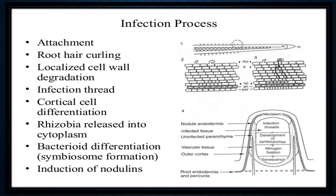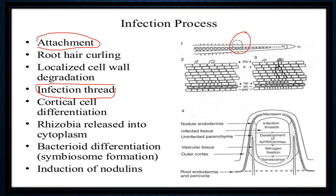The infection process involves: attachment at the root hair where lectins are present; root hair curling due to synthesis of cytokinins and auxins; localized cell wall degradation; and the infection thread, which is the movement of bacteria toward the cortical region. After reaching the cortex, differentiation occurs within those cells and Rhizobium is released into the cytoplasm.